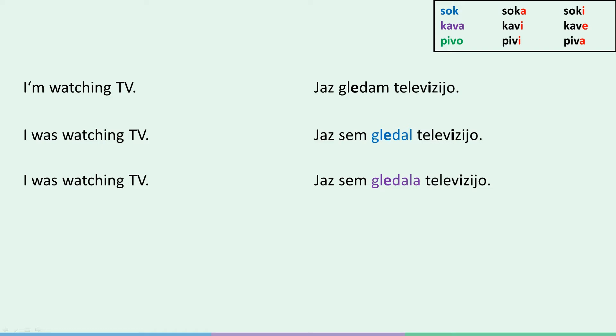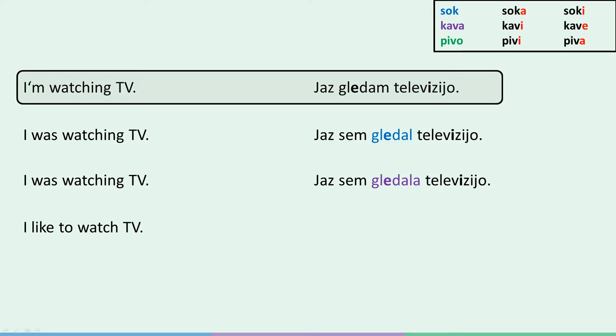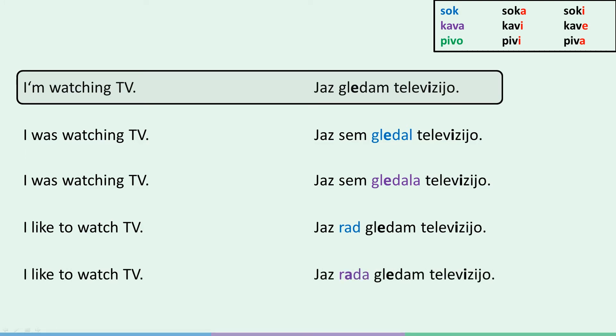Now on to 'like'. I like to watch TV. Because rad is an exception, even in the present tense it forces us to make a gender decision. In this regard, it's different from all Slovene verbs, because technically it's not a verb. With other verbs in the present tense, gender doesn't play a role, just like we've seen in the first example of 'I'm watching TV' — the same sentence applies to males and females. However, because rad is an exception, we have to keep the same things in mind as we did with the past tense. A male would say: Jaz rad gledam televizijo. And a female would say: Jaz rada gledam televizijo.